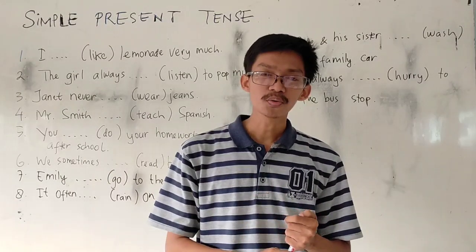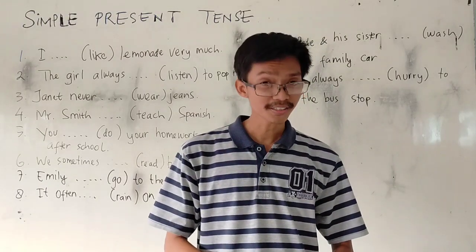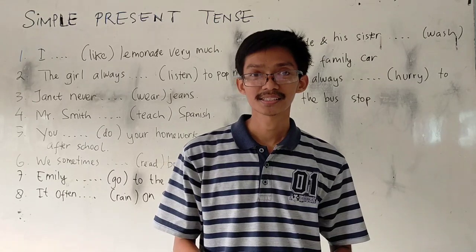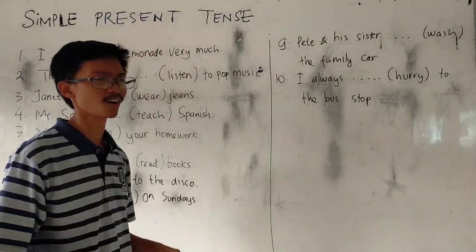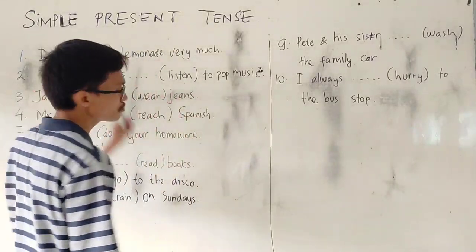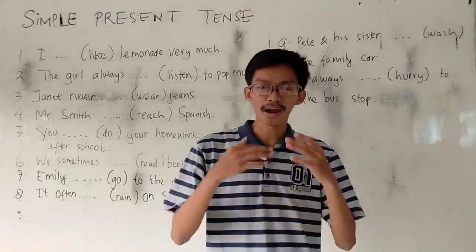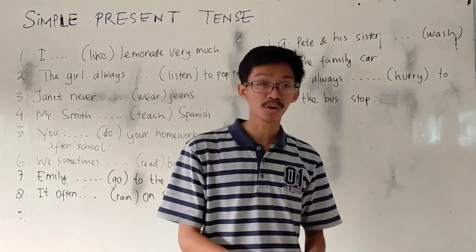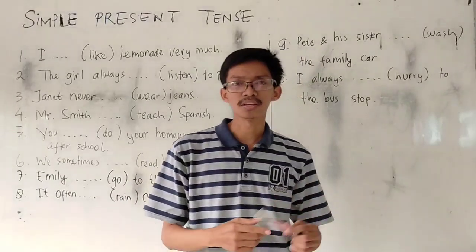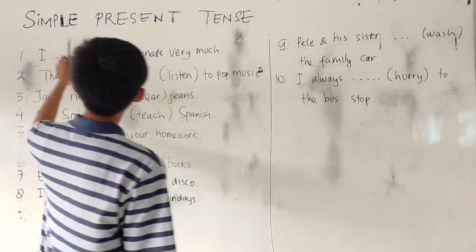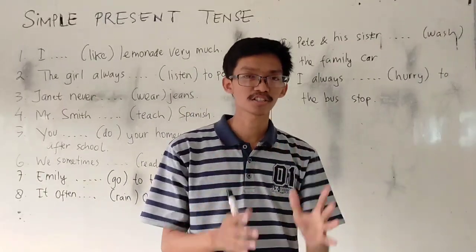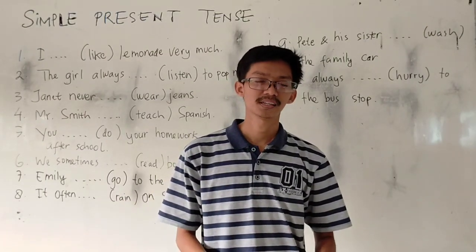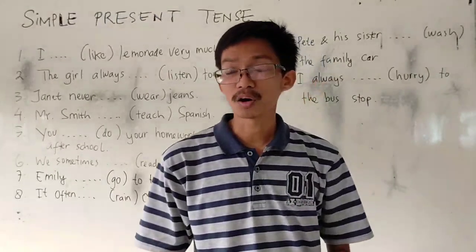Last week I gave you 10 questions about simple present tense. Do you still remember the function of simple present tense? Simple present tense — it's not always simple, but it says it's simple. When you want to talk about your daily habits, home activities, or things that you do every day or regularly, you can use simple present tense. That's the function: to tell events or activities that you do every day or regularly.